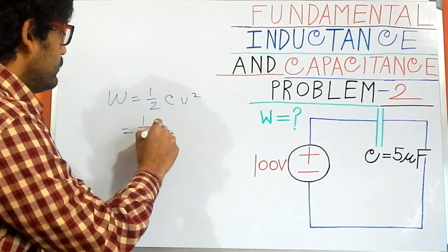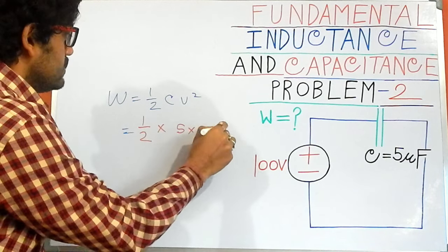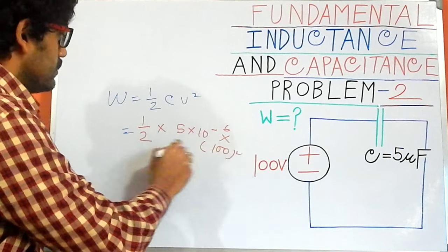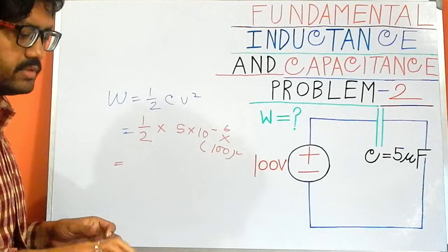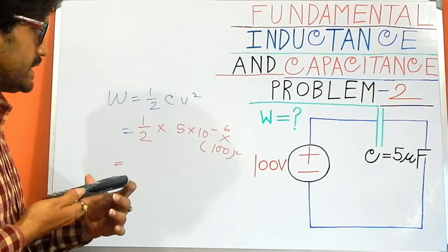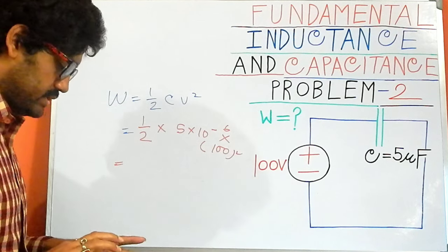Which is half C means 5 times 10 to the power minus 6, into V squared means 100 squared. And by using the calculator, I will get the exact value of energy across our capacitor.